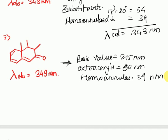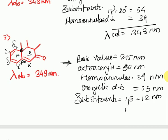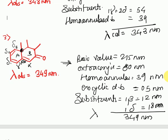Then exocyclic double bond: this bond is exocyclic to ring A, contributing 5 nanometers. For substituents: this is the alpha carbon, then beta, gamma, delta 1, delta 2, and delta 3. There is one delta and one beta substituent. One beta substituent contributes 12 nanometers and one delta substituent contributes 18 nanometers. The total is 349 nanometers, which is exactly equal to the lambda observed.